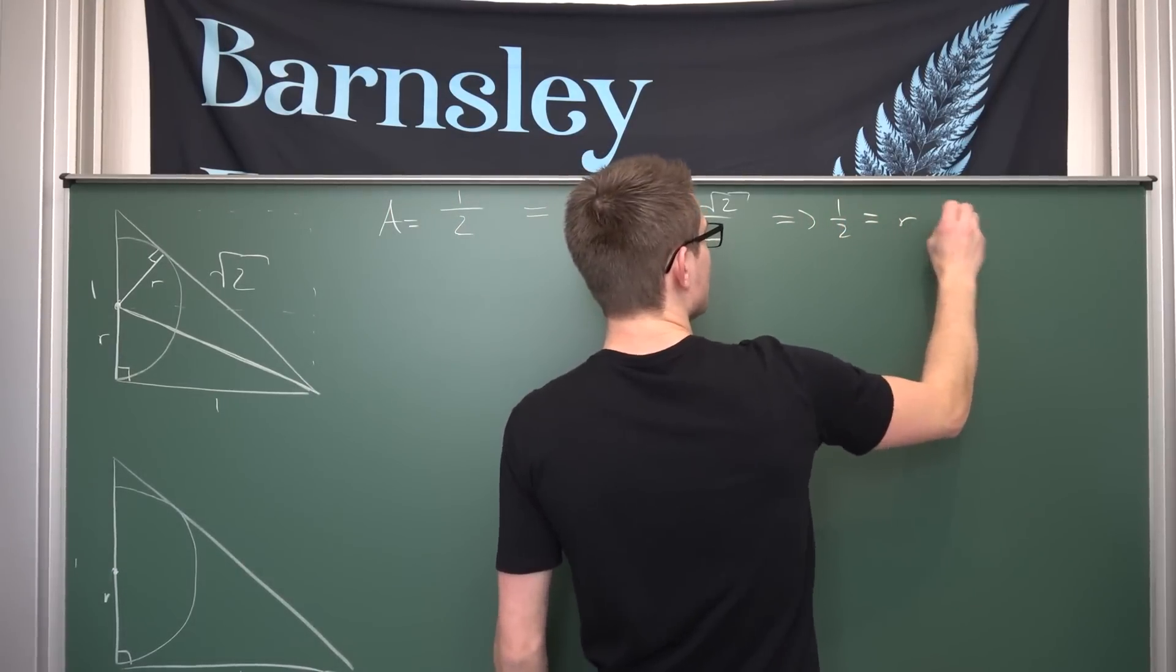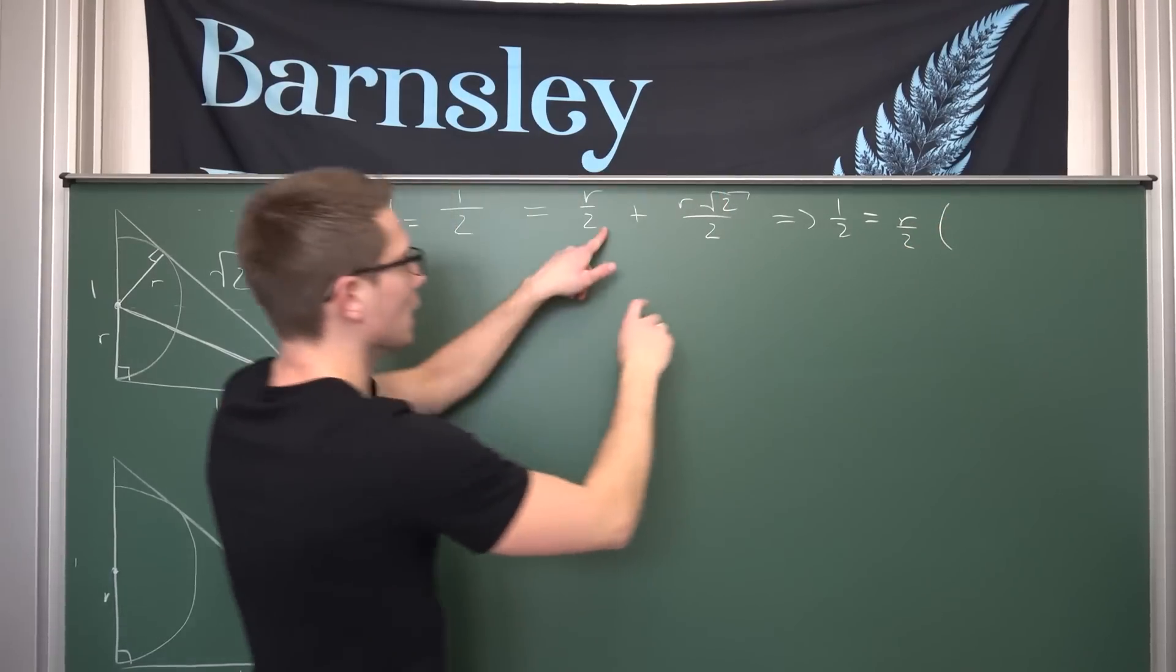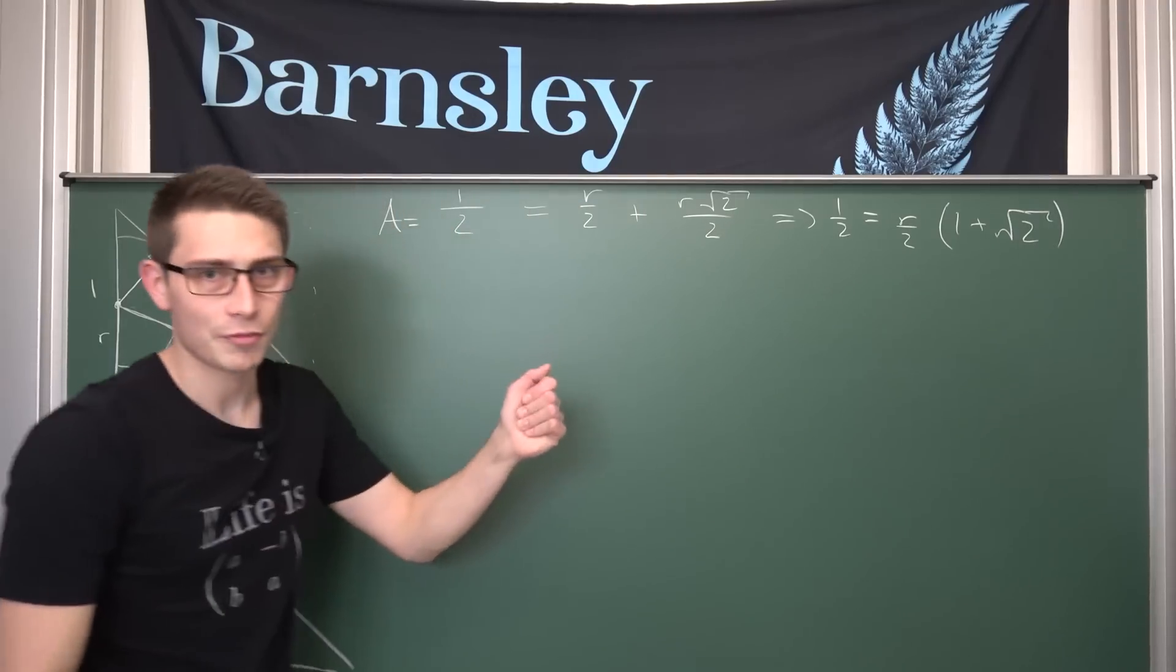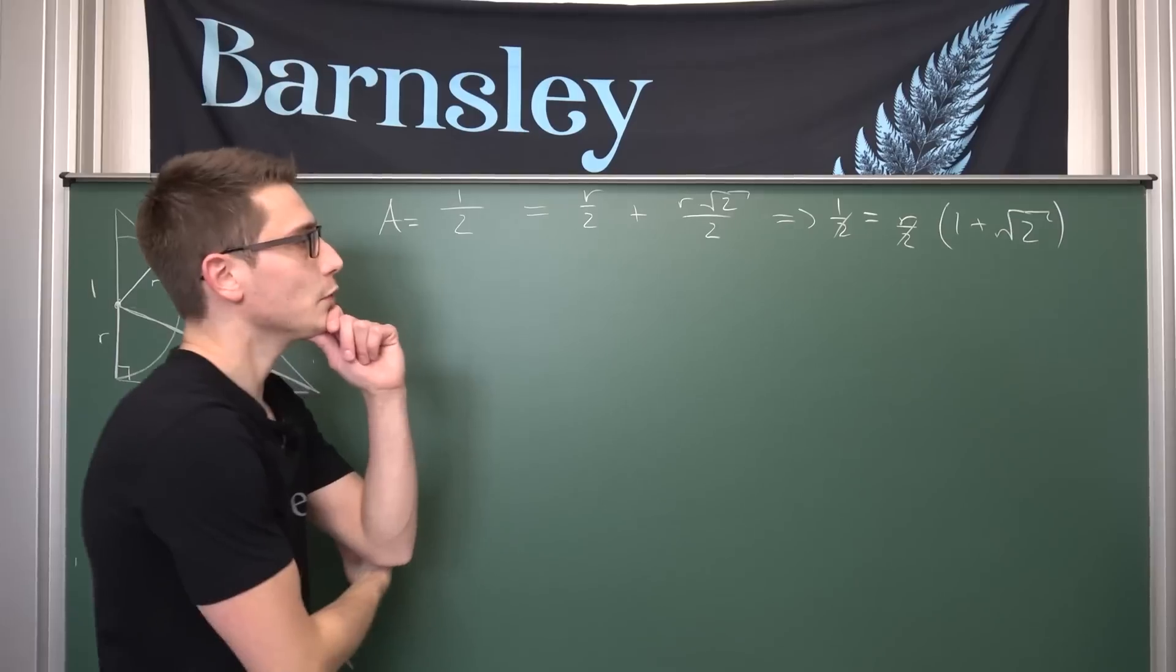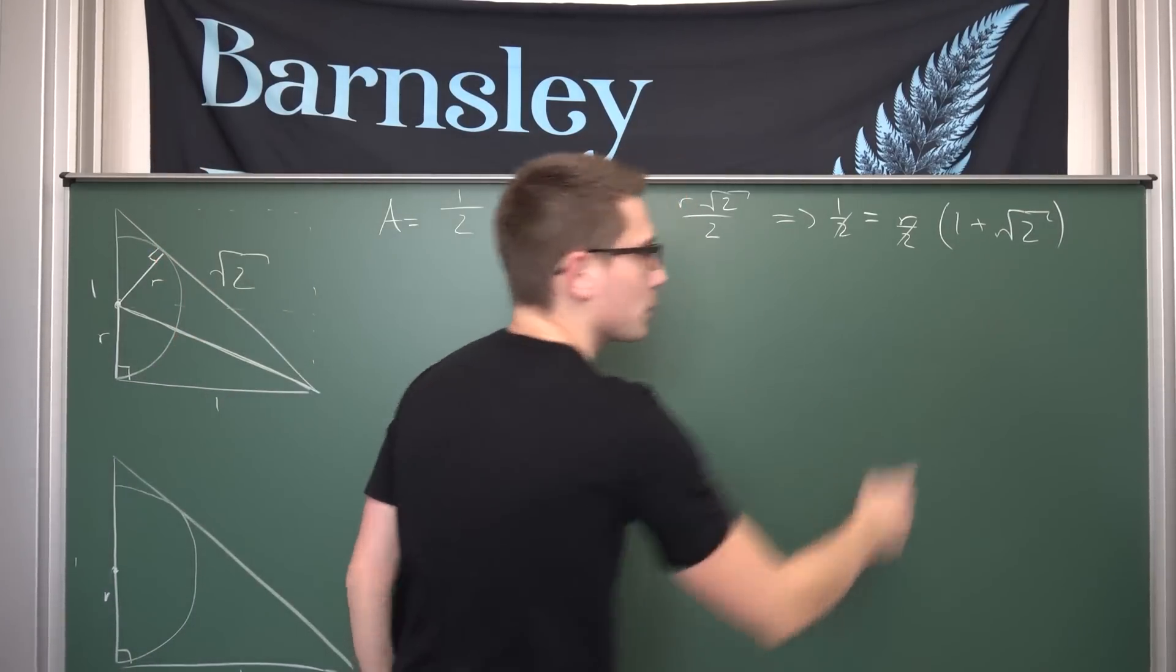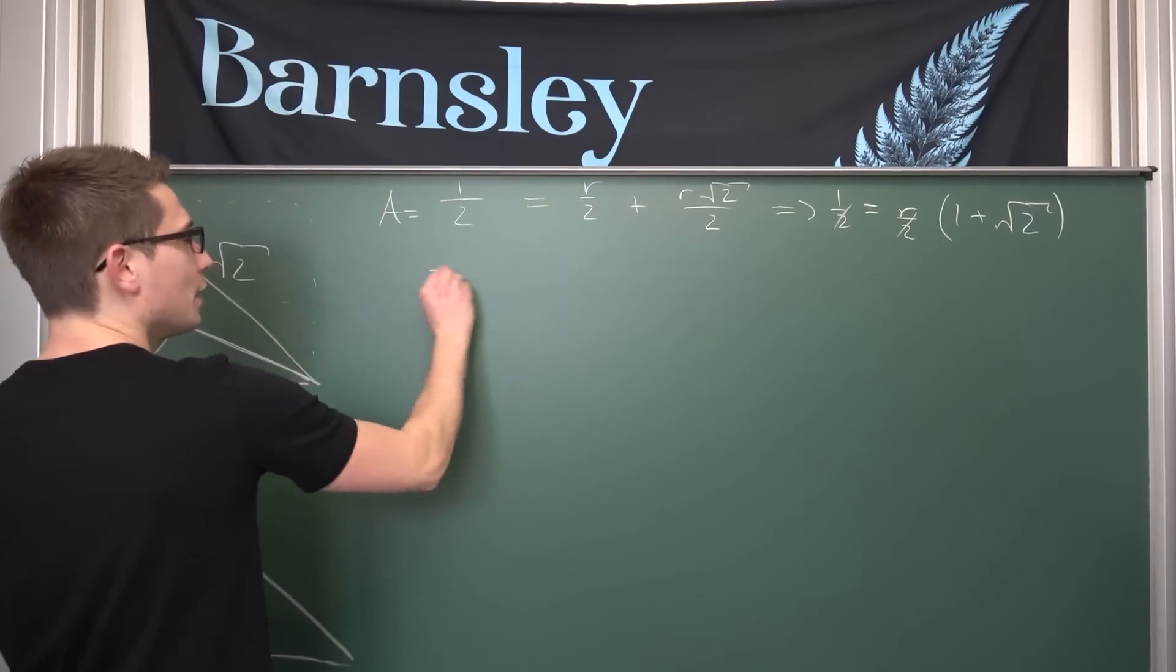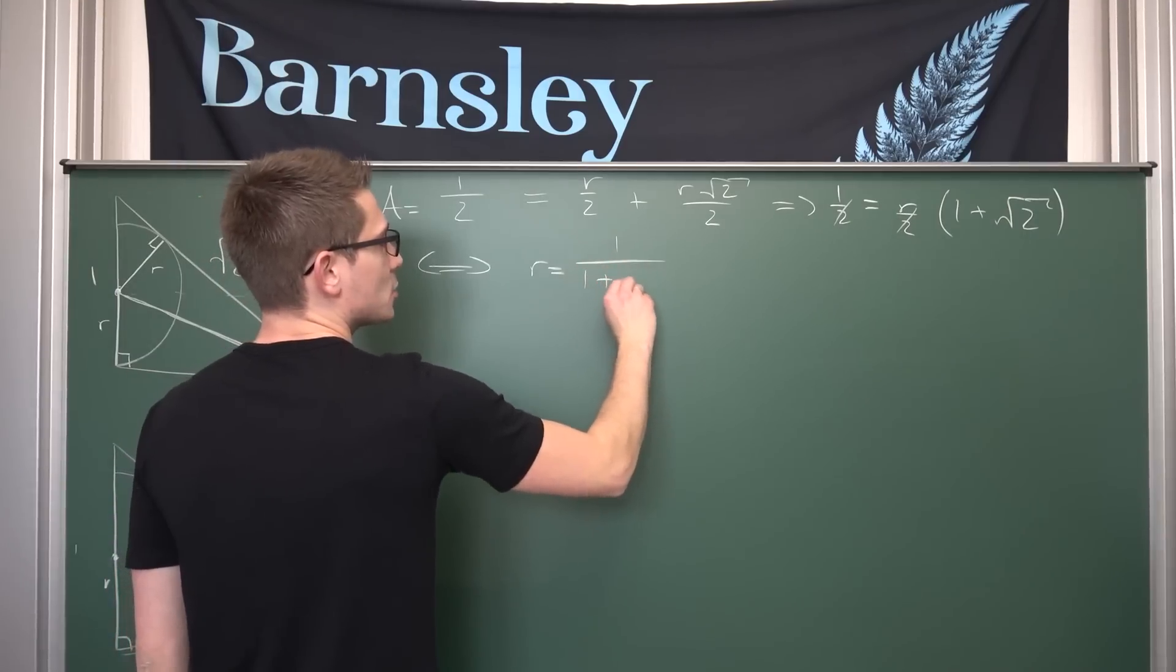This is just something that happens when you take inscribed triangles. And that way we are going to have the height times the length right here divided by 2, giving us the area of this triangle. Namely, what we are going to add to r over 2 is nothing but r times the square root of 2 over 2. And now you might notice we have a common factor of r. Meaning overall, 1 half is hence nothing but r over 2 times 1 plus square root of 2.